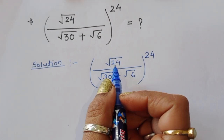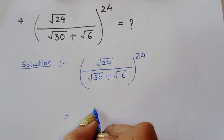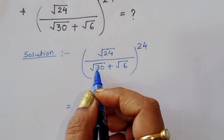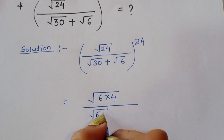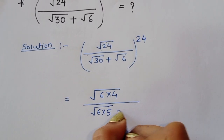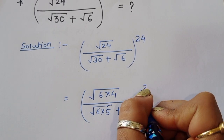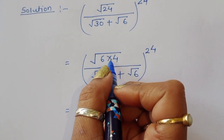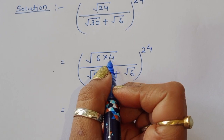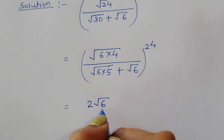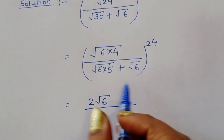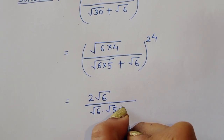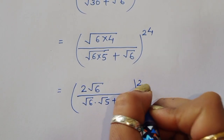We start with √24 divided by (√30 + √6), all raised to the power 24. We can write 24 as 4×6, so √24 = √6 × √4 = 2√6. In the denominator, we separate terms: √30 = √6 × √5 and we factor out √6 from both terms, giving us 2√6 divided by √6(√5 + 1), all to the power 24.